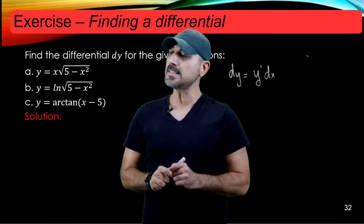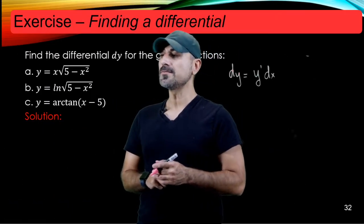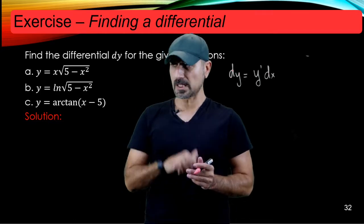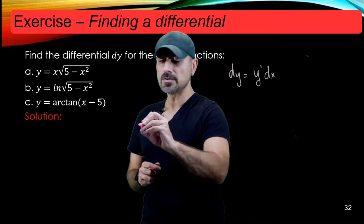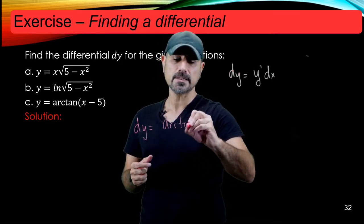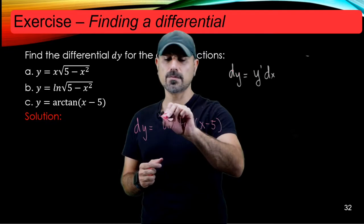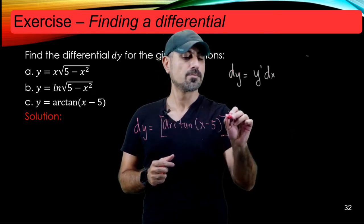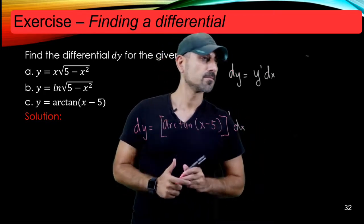Alright, so finally for part c, we're going to consider taking the derivative of arctan type function. So you've got to remember the rule for that.